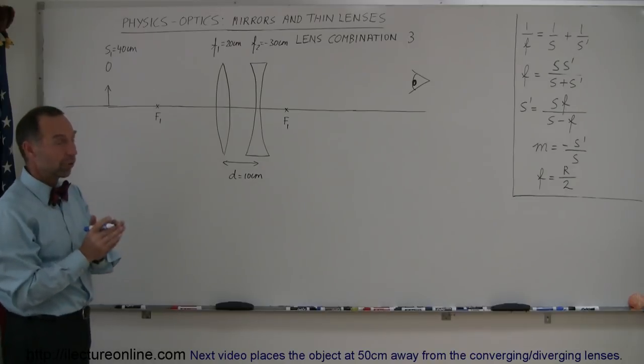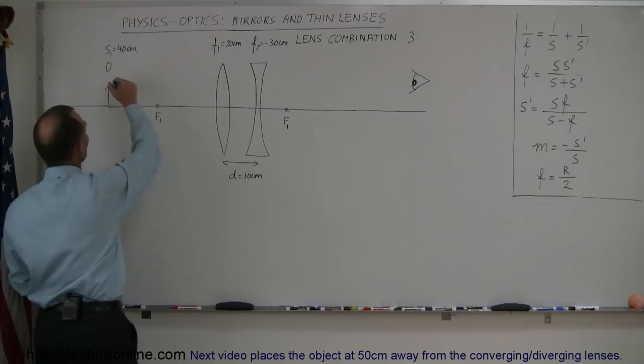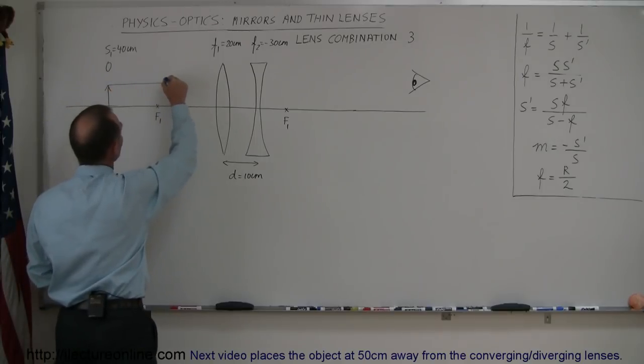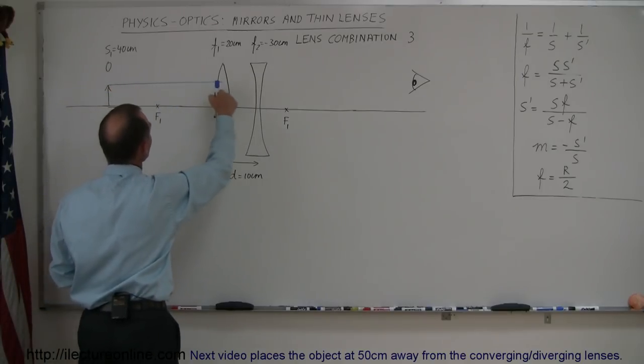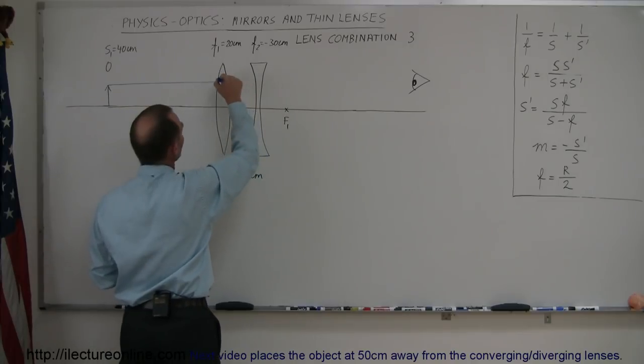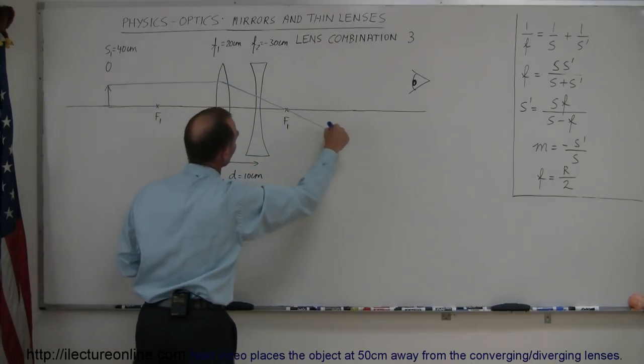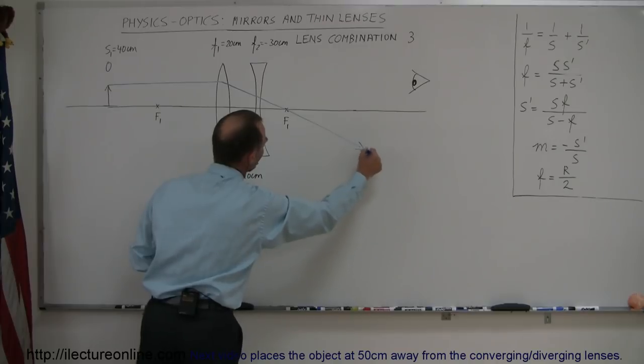If we only consider the first lens, let's find the first image. We do that by drawing a ray parallel to the normal till we hit the lens, and then the ray will diverge and go through the focal point on the other side. That would be ray number one.